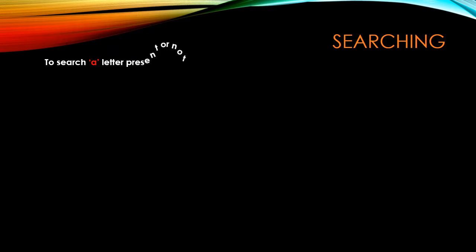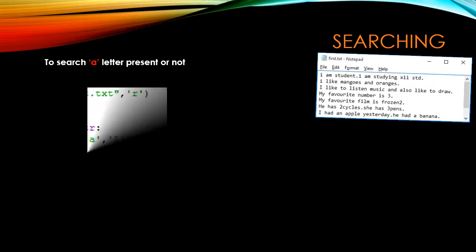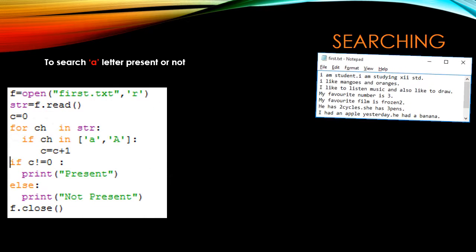Next, to search for a particular letter — here we are going to search whether the letter 'a' is present in first.txt file or not. 'a' means we can consider the lowercase or uppercase letter also. So first we are opening the file in read mode, reading all the characters one by one into variable 'ch', and comparing using the 'in' operator. We can check multiple characters in a list using 'in' or double equals.